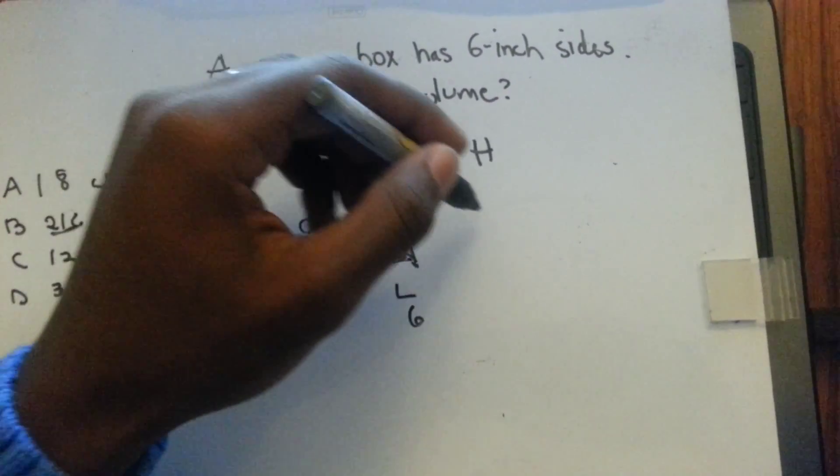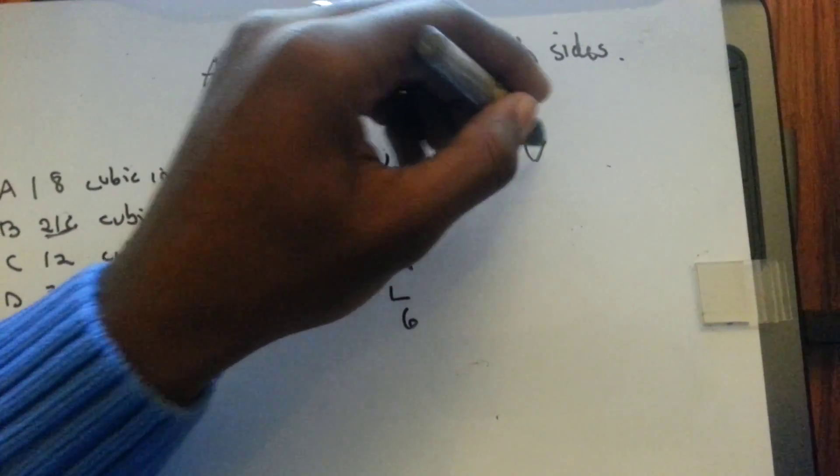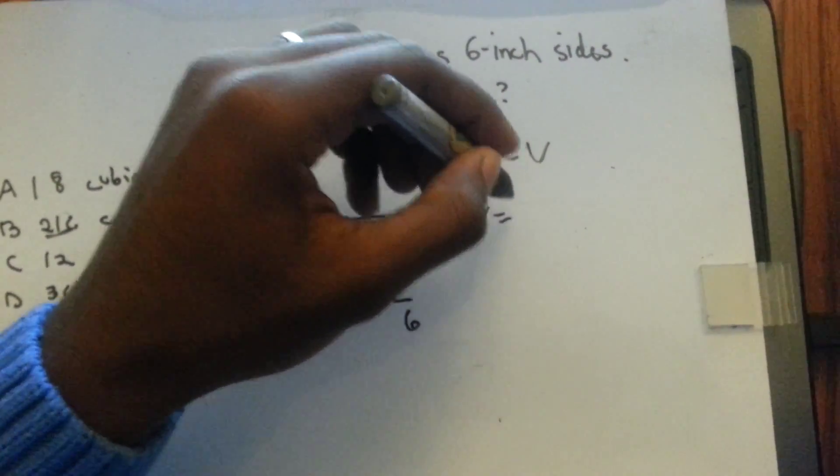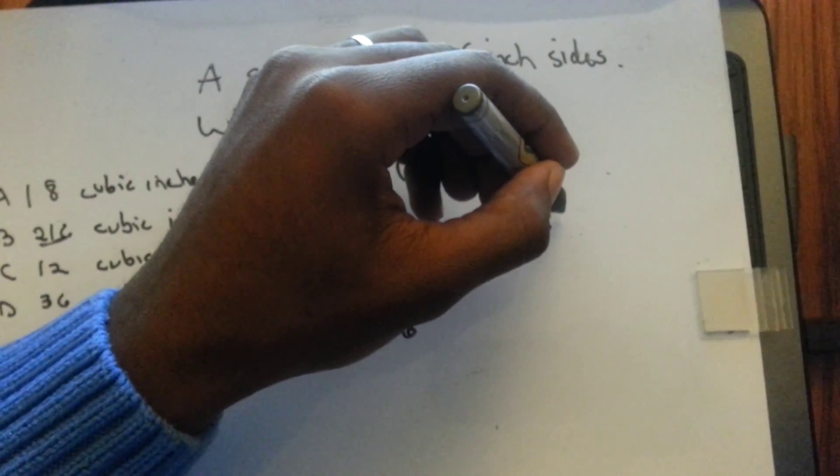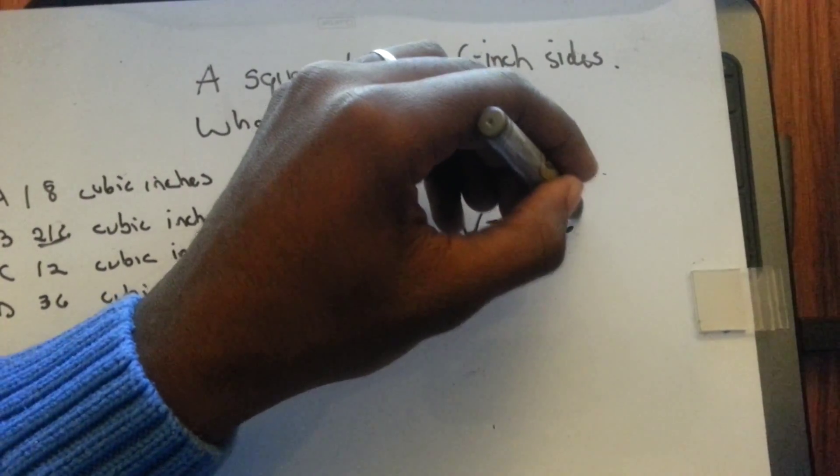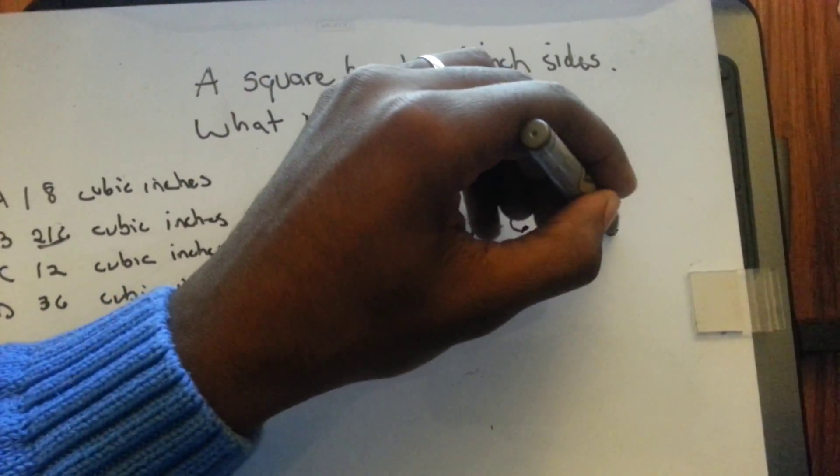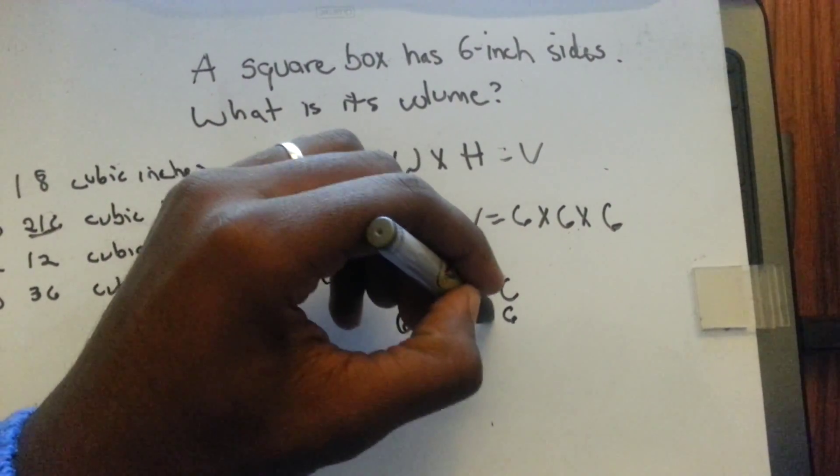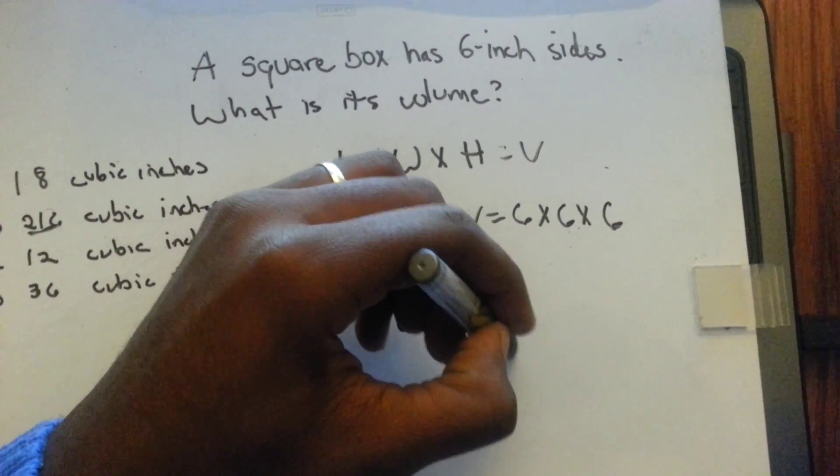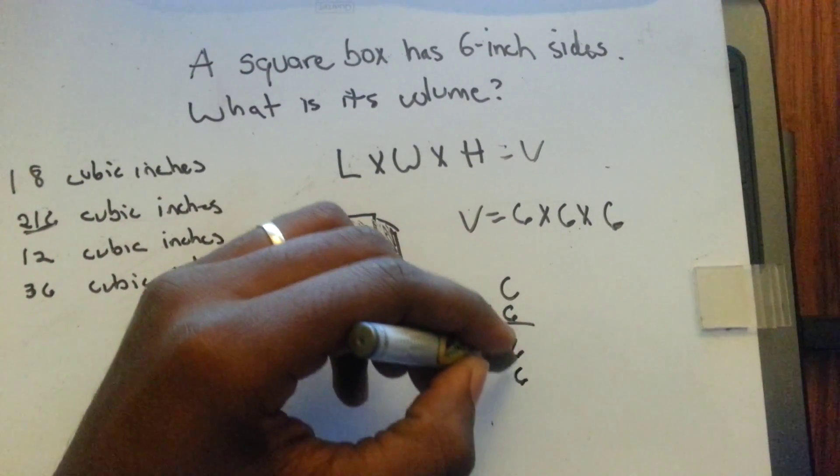So to find the volume, volume equals length which is six times the height which is six. So six times six equals 36 times six again.